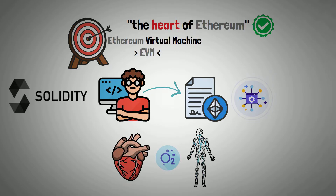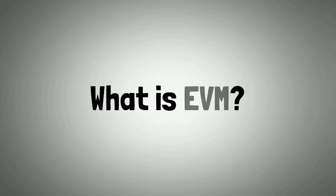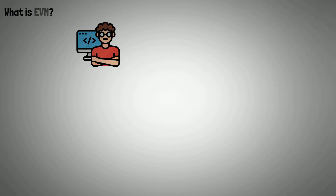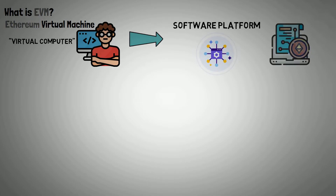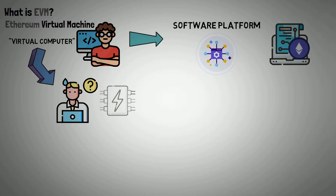So let's start with what is EVM? Developers use an Ethereum virtual machine, commonly called a virtual computer, as a software platform to build decentralized applications and to run and deploy smart contracts on the Ethereum network. The EVM is the perfect platform for new programmers because it does not require extremely powerful hardware.